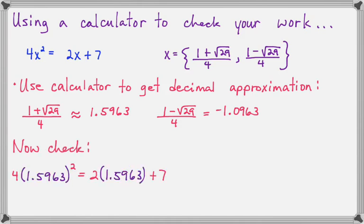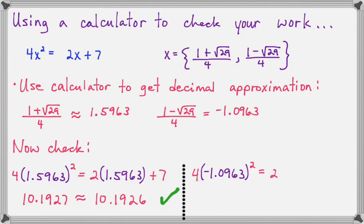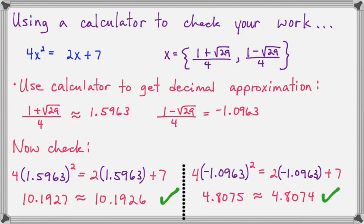I've copied down the original equation but put in 1.5963 in place of x. If we do 1.5963 squared and multiply by 4, we get about 10.1927. And 2 times that number plus 7 gives about 10.1926 — the same to four decimal places, so both sides of the equation are equal. Let's verify the other answer: 4 times negative 1.0963 squared gives 4.8075 on the left, and 2 times negative 1.0963 plus 7 gives 4.8074 on the right — close enough to confirm they match.